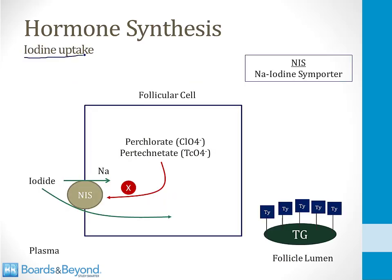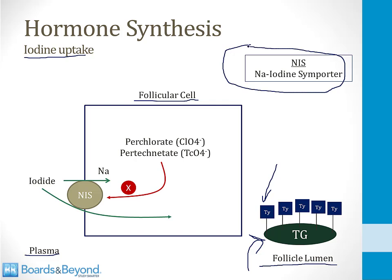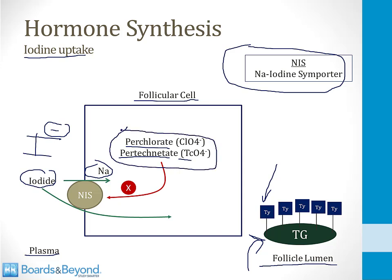The first step is iodine uptake by thyroid follicular cells. There is a protein pump called NIS — the sodium-iodine symporter — in the membrane of follicular cells that brings iodine into the cell along with sodium. The iodide in plasma carries a negative charge, and the NIS symporter can also import other negatively charged ions like perchlorate and pertechnetate, which compete with iodine and are therefore inhibitors of the NIS pump.